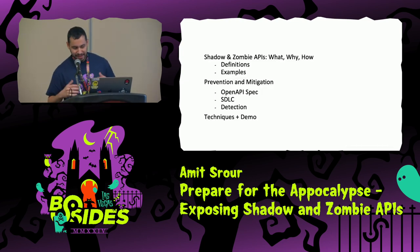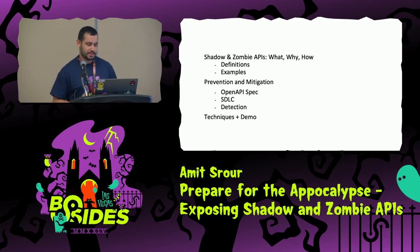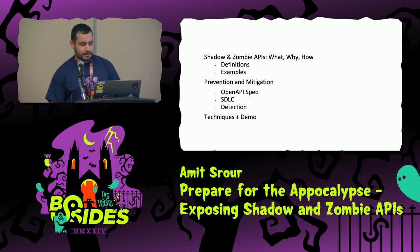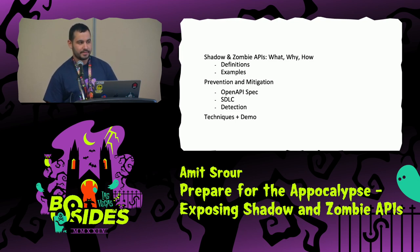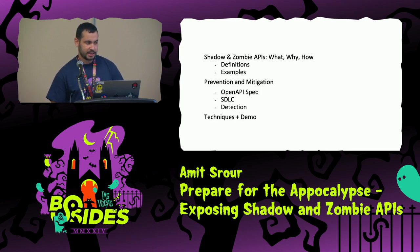First, we'll define what shadow and zombie APIs are, and I'll show you a few examples. We'll talk about the preventative SDLC on how organizations should implement measures to stop shadow APIs from being an issue, and finally some techniques for major frameworks.